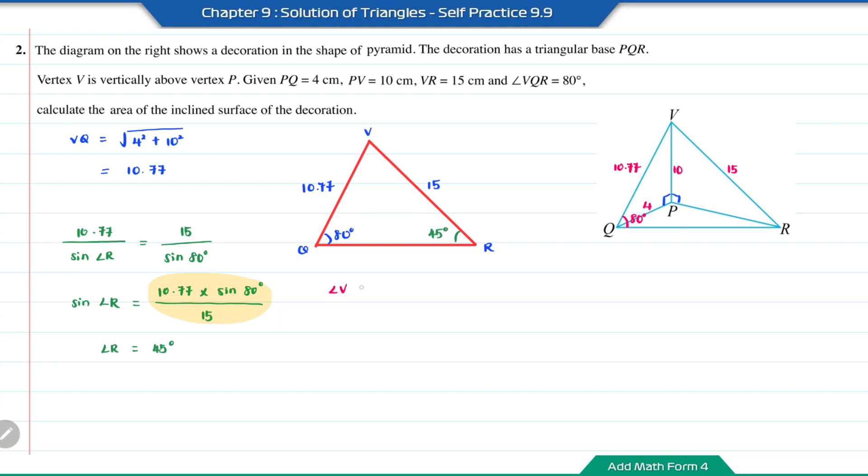Now we can find angle V, which equals 180 minus 80 minus 45, which equals 55 degrees.